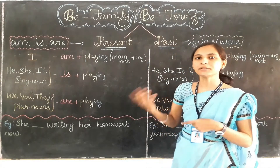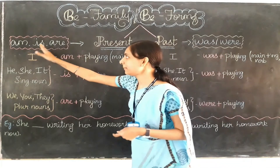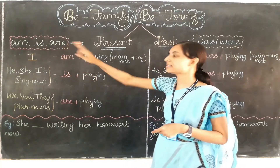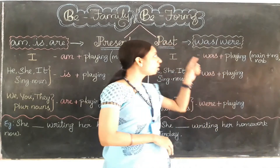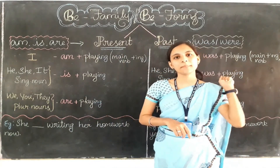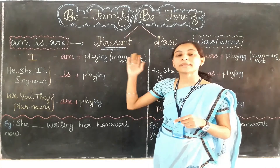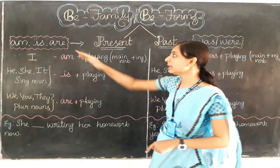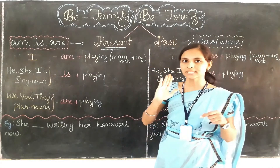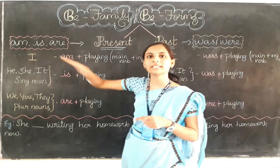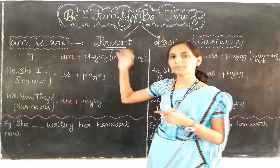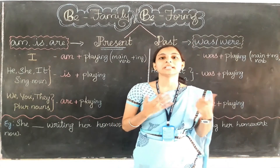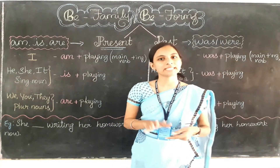So what are the present time verbs? Am, is, are — these three are the present time verbs. And was, were are the past time verbs. Present time verbs help us to tell about an action which is happening now. If you find any of these words in a sentence, it talks about the present time only. If you find was or were in a sentence, then it talks about the past time only. We can identify it easily.